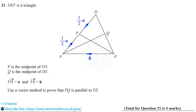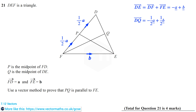If we start with an expression for vector DE, that's equal to vector DF plus vector FE, so this equals minus A plus B. Vector DQ is equal to minus a half A plus a half B, and we know that because Q is the midpoint of DE.